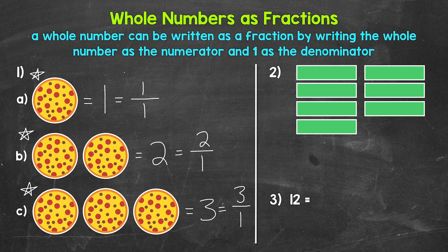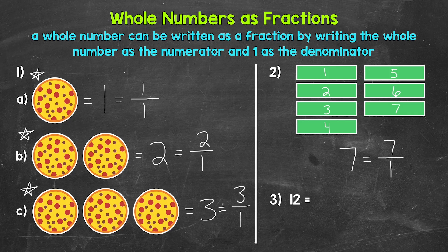For number two, we have seven whole rectangles. Each rectangle is just one part, so one is our denominator, and we have seven wholes, so seven is our numerator. Our fraction is seven over one. For number three, we have 12 — no models or shapes needed. All we need to do is write 12 over one. That's 12 as a fraction.